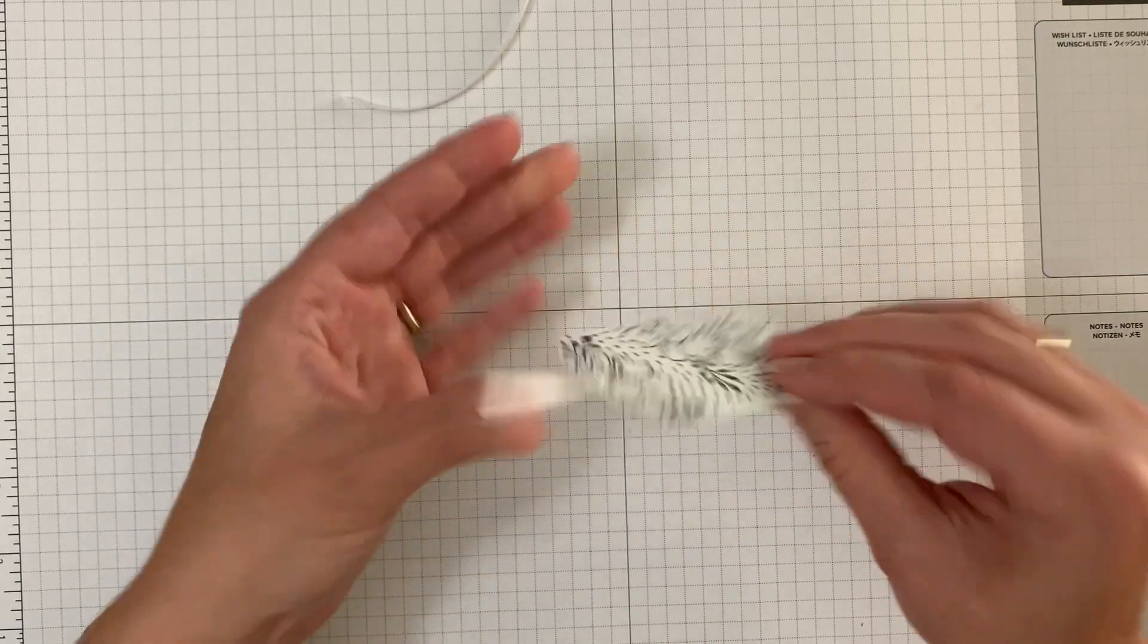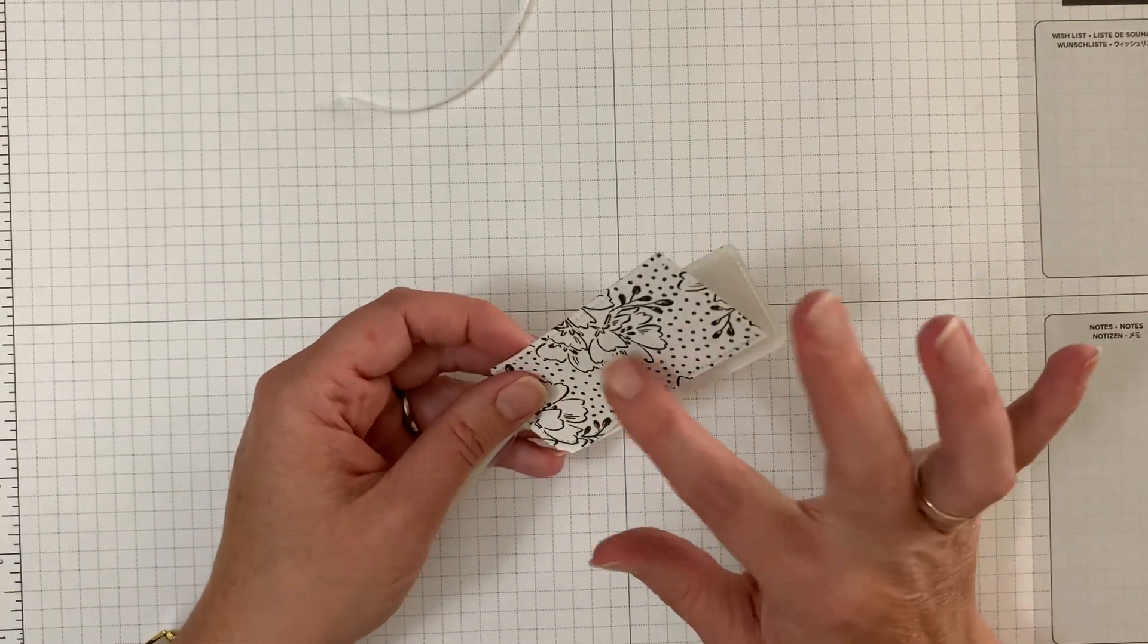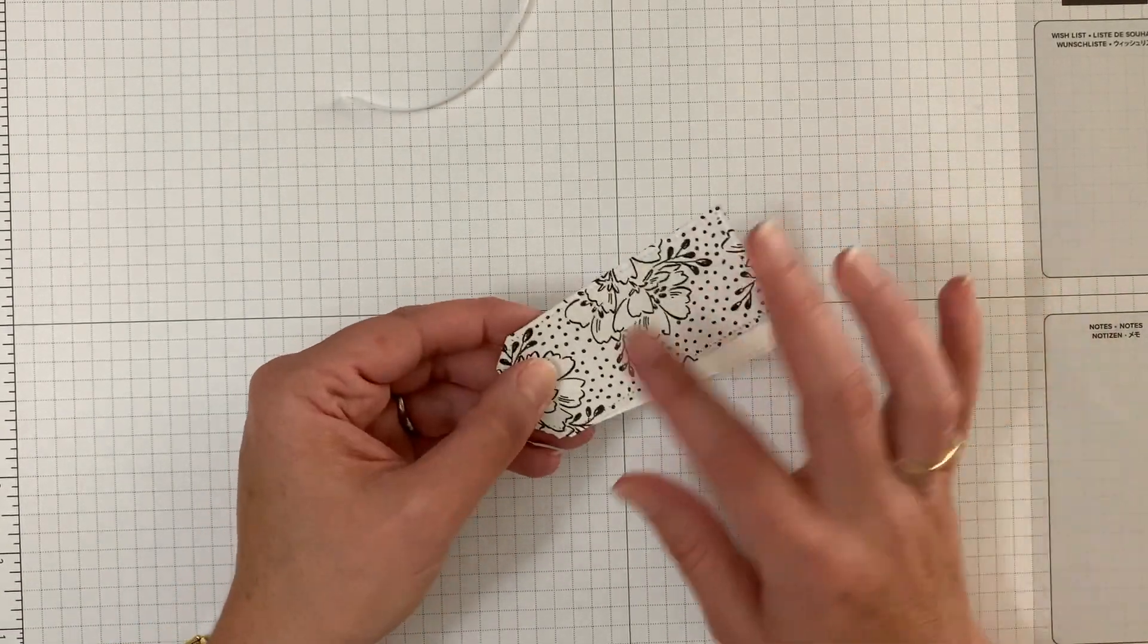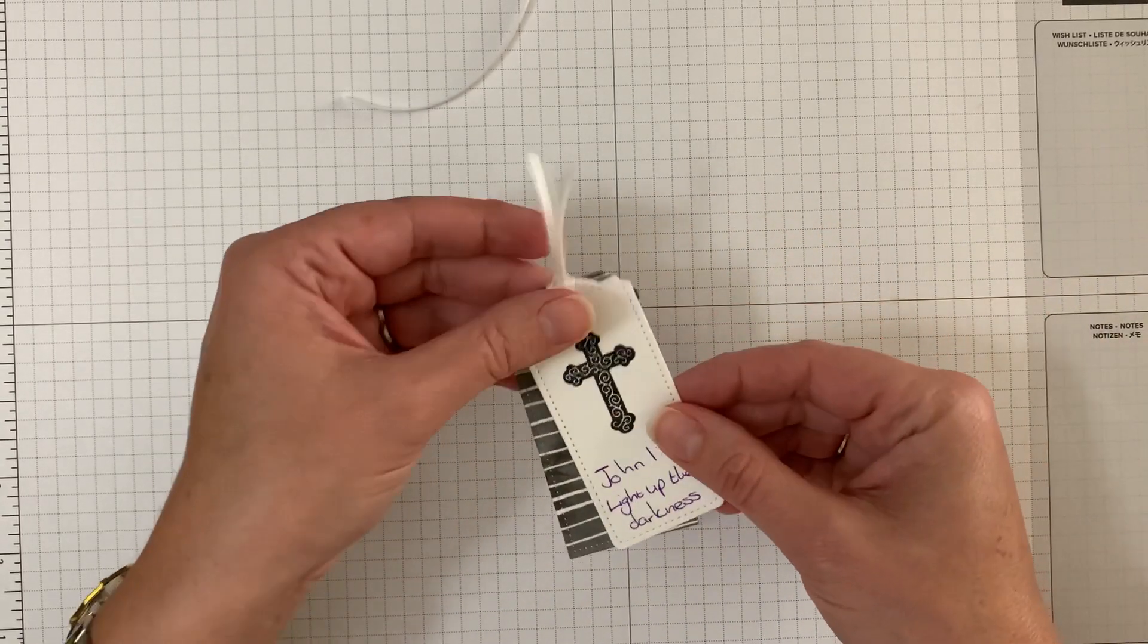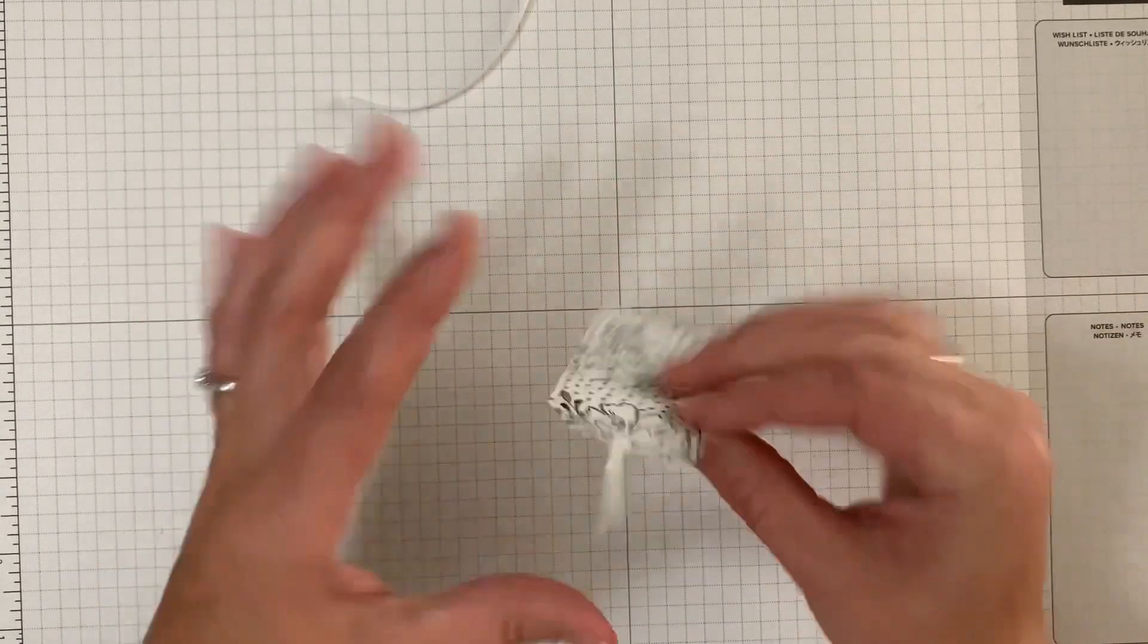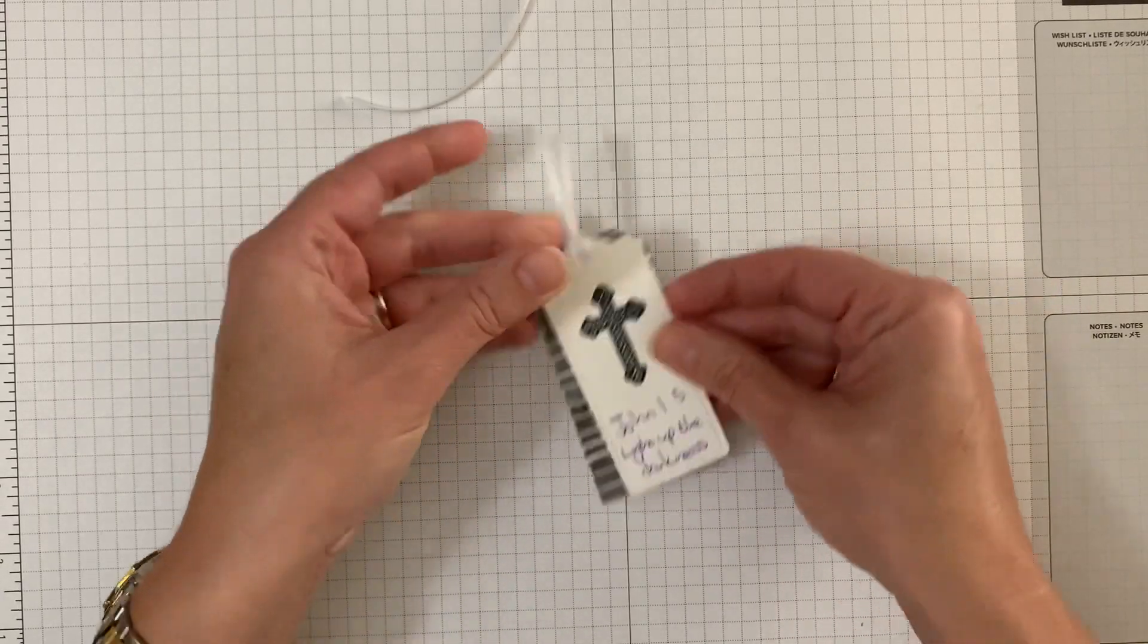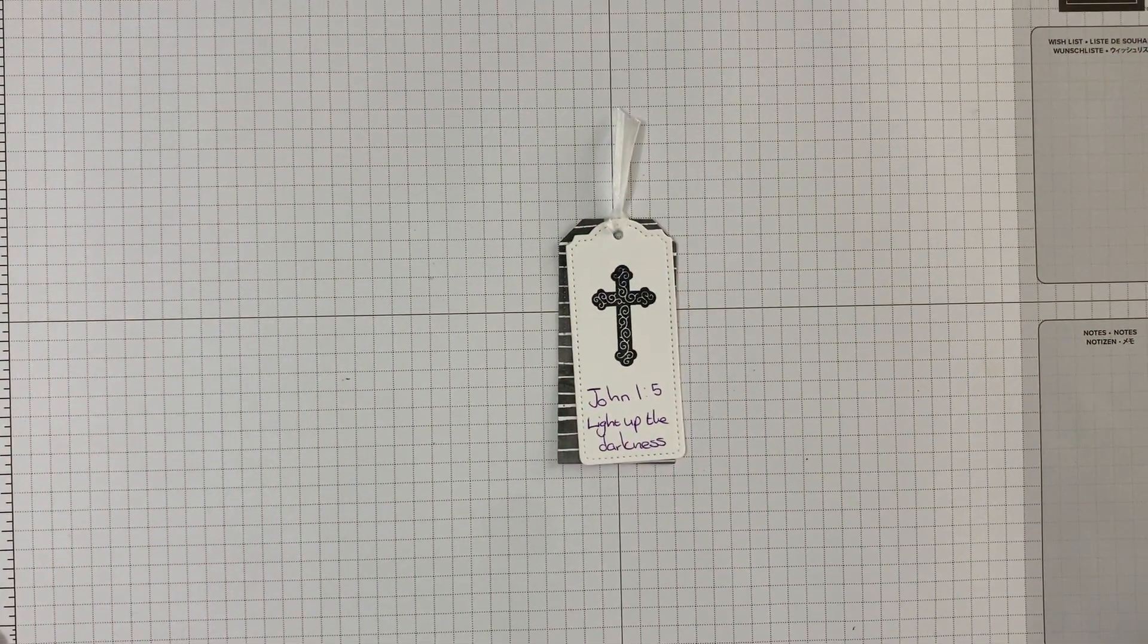Now if you wanted to use this as a gift tag, you can write the recipient's details on the back, or just use paper that has a light neutral background and then you can write all of that on the back. But you also have the white to write on there.